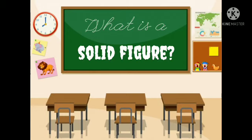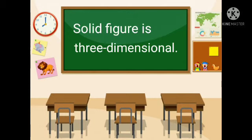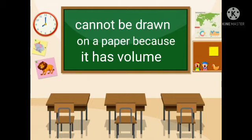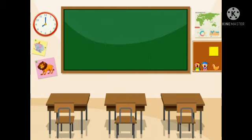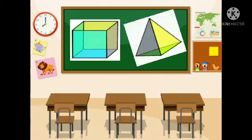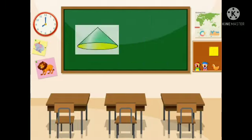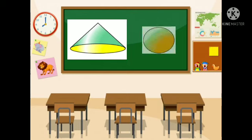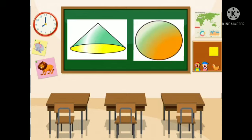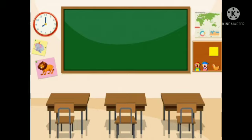And now, what is a solid figure? A solid figure is three-dimensional. So it cannot be drawn on a paper because it has volume. Examples of solid figures are cube, pyramid, cone, and sphere. Okay, is it understood? Very good.